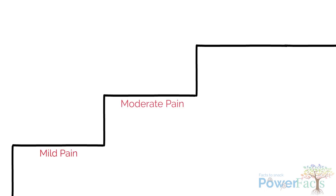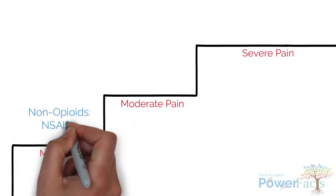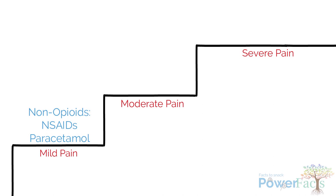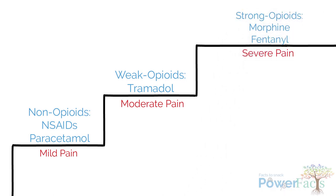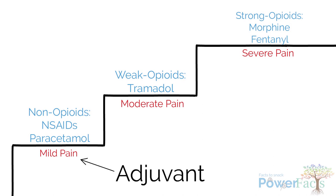The ladder encourages administration of medications in the following order to control pain: non-opioids such as NSAIDs and paracetamol, followed by weak opioids such as tramadol, and lastly strong opioids such as morphine or fentanyl. Adjuvant medications such as antidepressants, anticonvulsants, or steroids can be given at any step to help with pain control as well.